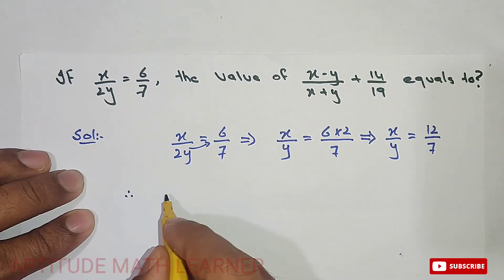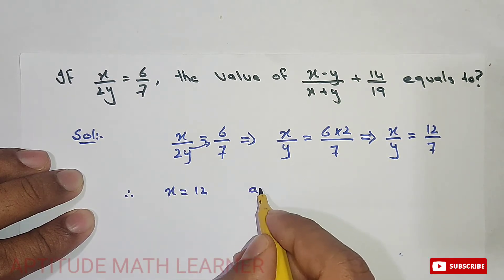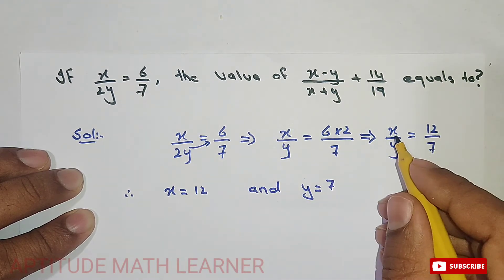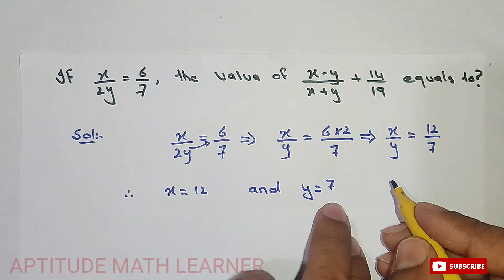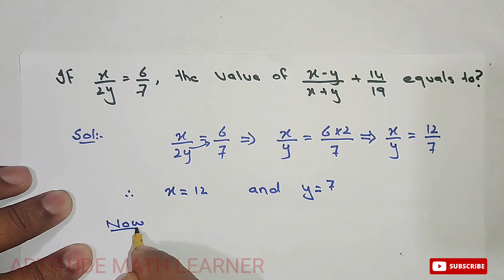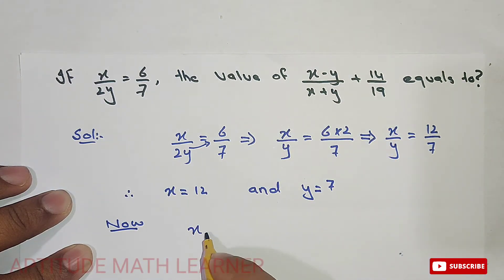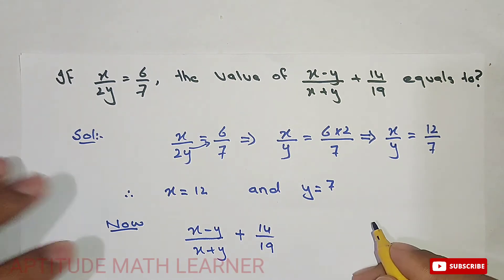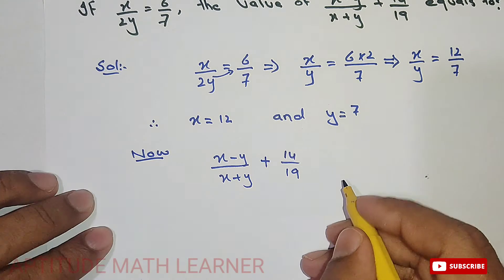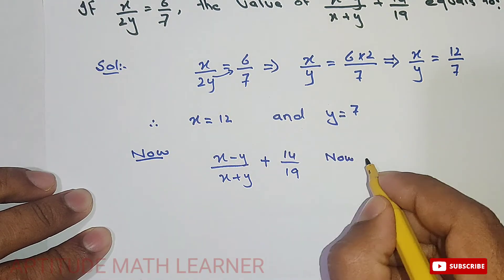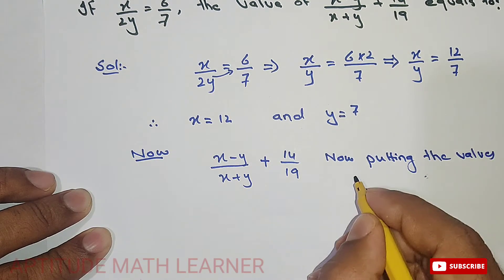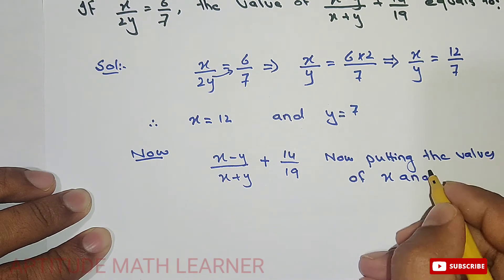Therefore, x is equal to 12 and y is equal to 7. Now putting the values of x and y into the expression: x minus y upon x plus y plus 14 upon 19.